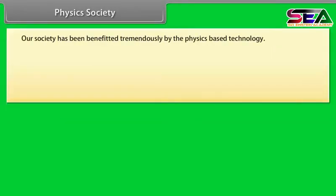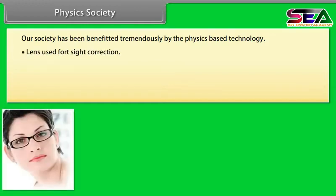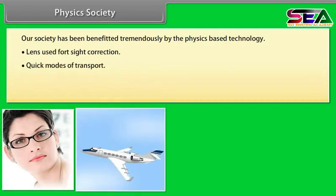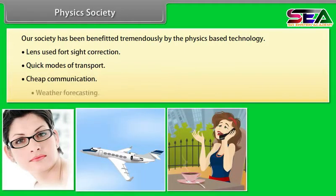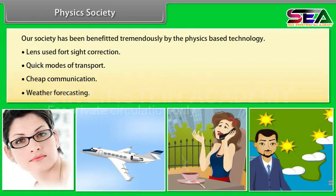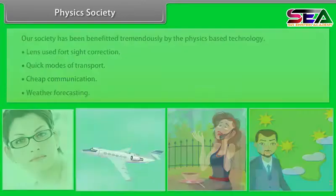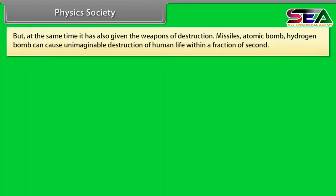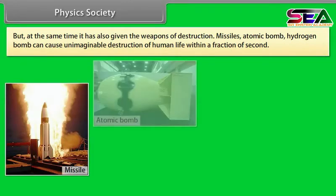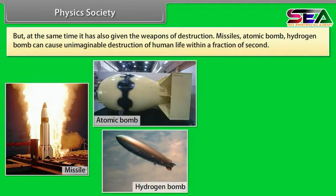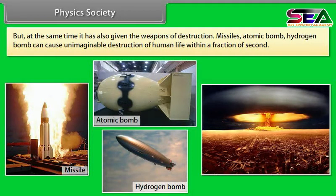Physics and society. Our society has been benefited tremendously by physics-based technology. Lens used for sight correction, quick modes of transport, cheap communication, weather forecasting are some new dimensions of progress due to physics. But at the same time it has also given weapons of destruction. Missiles, atomic bomb, hydrogen bomb can cause unimaginable destruction of human life within a fraction of second.